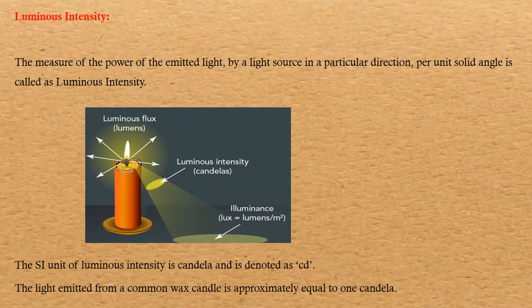Luminous intensity: The measure of power of emitted light by a light source in a particular direction per unit angle is called luminous intensity. The SI unit of luminous intensity is candela and it is denoted as cd in lowercase. The light emitted from a common wax candle is approximately equal to 1 candela.